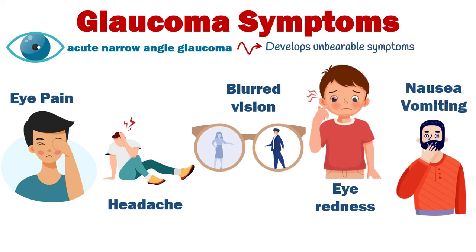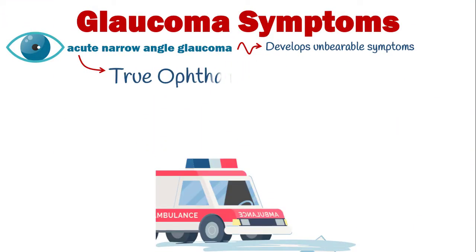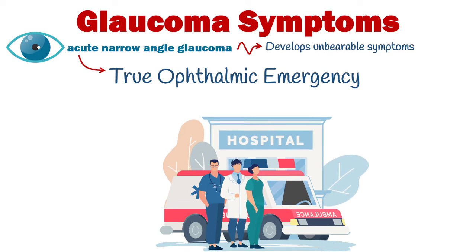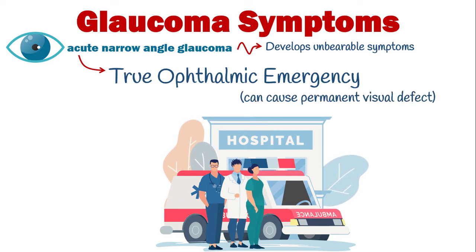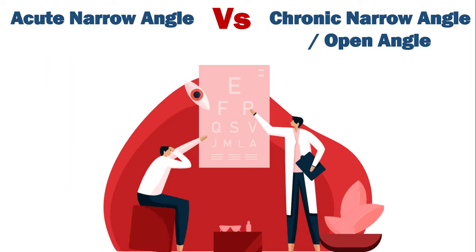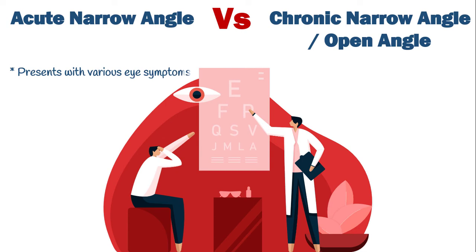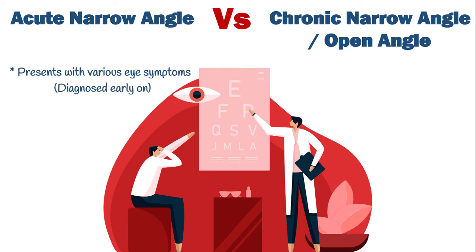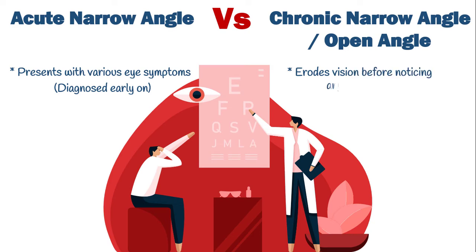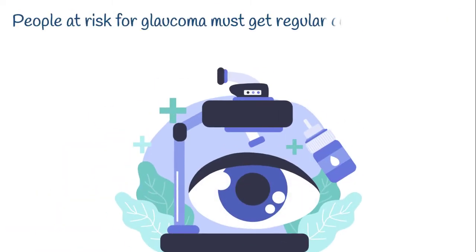In acute narrow-angle glaucoma, optic nerve damage can occur within a few hours. Unlike open-angle glaucoma, acute narrow-angle glaucoma is a true ophthalmic emergency that can cause permanent visual defect if not treated early. In short, acute narrow-angle glaucoma presents with various eye symptoms and is diagnosed early on, while open-angle and chronic narrow-angle glaucoma can erode vision before any symptoms are noticed.